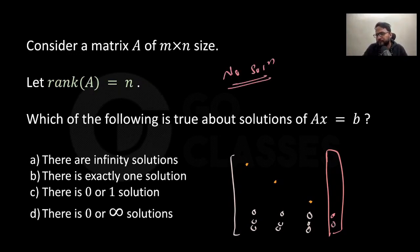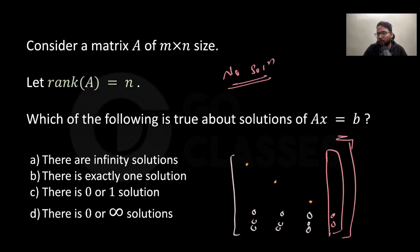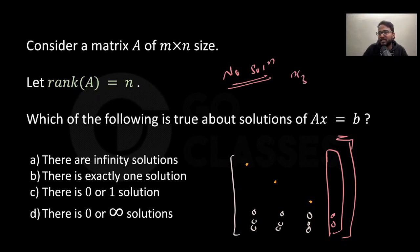If that entry is zero, then a solution exists. But is it an infinite or unique solution? It depends on free variables. Since every column has a pivot, there are no free variables — don't look at the rows, always look at the columns for free vs. pivot variables. With no free variables, it's a unique solution.